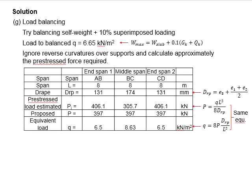Let us start the calculations for load balancing. Try balancing the self-weight plus 10% of the superimposed loading. The balancing stress will equal the self-weight of the slab plus 10% of GK and QK. That gives Q equals 6.65 kilonewtons per meter squared. As the continuous member consists of 3 spans, we need to calculate for all 3 spans.